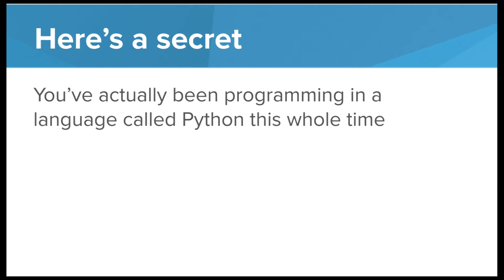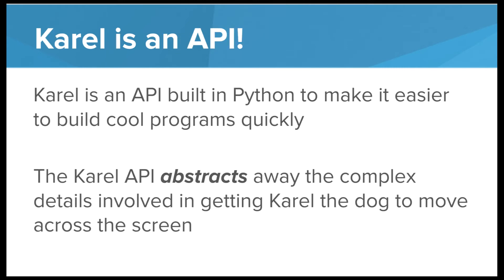I'm going to let you in on a little secret — you've actually been programming in a language called Python this entire time. You've been writing Python functions, Python commands, full Python programs. Python is a full professional language that is one of the most widely used languages in the world. So how does this relate to APIs? Carol is an API — an API built in Python to make it easier to build cool programs. The Carol API abstracts away the complex details involved in getting Carol the dog to move across the screen. We just type the Python command move and the Carol API takes care of the rest.